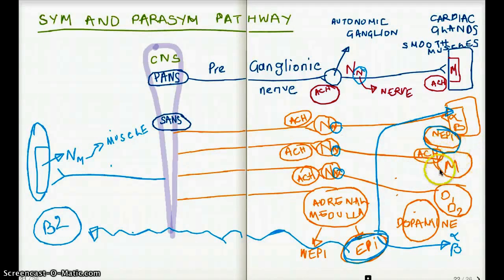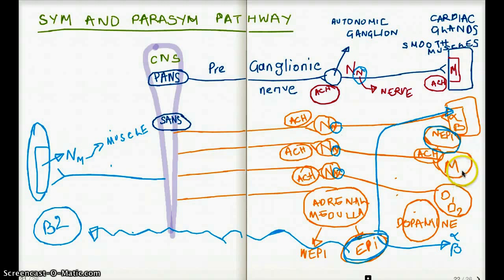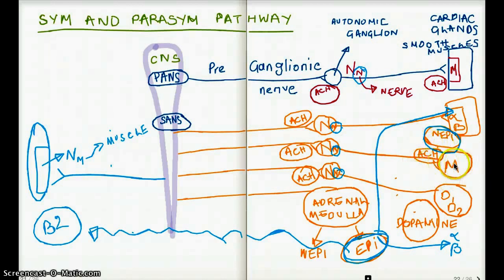Why would we have a muscarinic receptor under the sympathetic umbrella? That's because this is the paradox in the sympathetic nervous system where the sweat glands, the pilomotor glands, pilomotor muscles, and some other smooth muscles — a very small handful — are innervated by muscarinic receptors where the neurotransmitter is acetylcholine. It does fall under the sympathetic nervous system, not the parasympathetic, making this an exception to the rule.